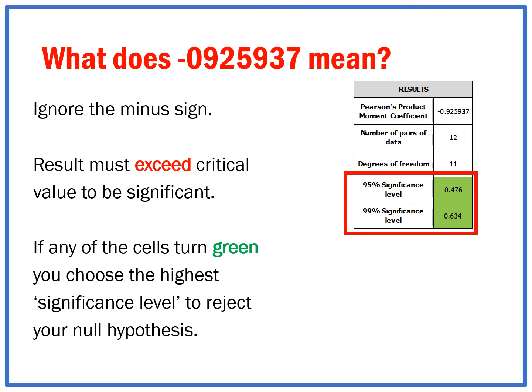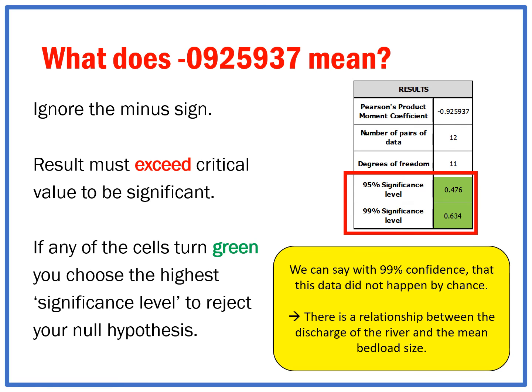Ignoring the minus sign, my result has exceeded both critical values. Because both boxes turned green, I can choose the highest significance or confidence level to reject my null hypothesis. If both had turned red, I would have to accept the null hypothesis. If only the 95% turned green, I could only accept it at the 95% level. Because both are green, I can say with 99% confidence that this data did not happen by chance — there is a relationship between discharge and mean bed load size. The relationship being: as discharge increases downstream, the mean bed load size does decrease downstream.